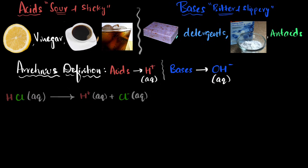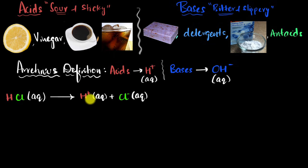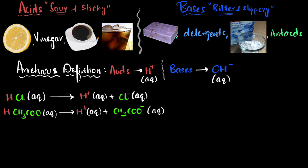If you take HCl in an aqueous medium, you will find that HCl will dissociate into H+ ions and Cl- ions. Since we get H+ ions on mixing HCl in water, HCl is an acid — this is hydrochloric acid. Another example is acetic acid, and if you mix it in water again, you'll get some H+ ions. So this is also an acid.